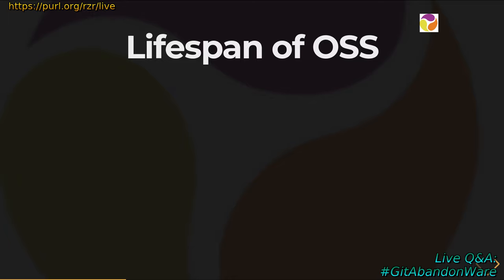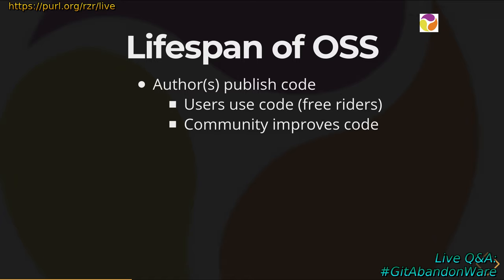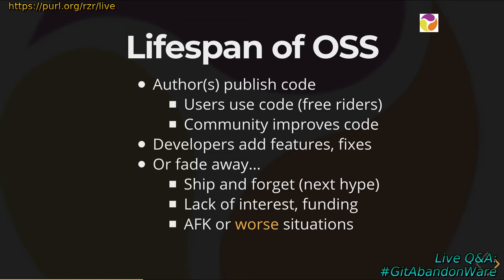So what is the lifecycle of an open source software? First the author publishes the code, users use the code. If they are just using and not giving back, we call them free riders, which is not good for the community. The community plays the game and tries to improve the code and make it available for everyone. Developers are adding features, fixes, or new targets — or they are just disappearing. Sometimes people don't care because they're moving to something different, with lack of interest or lack of funding. This means it's only voluntary work, and they can move away. So we have a sustainability challenge to address.